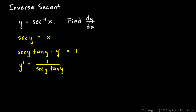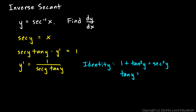Then we use a trig identity. Here's the identity that works in this case: 1 plus tangent squared y equals secant squared y. So let's take this trig identity and solve it for tangent y. Tangent y is the square root of secant squared y minus 1. Let's substitute that in for tangent y.